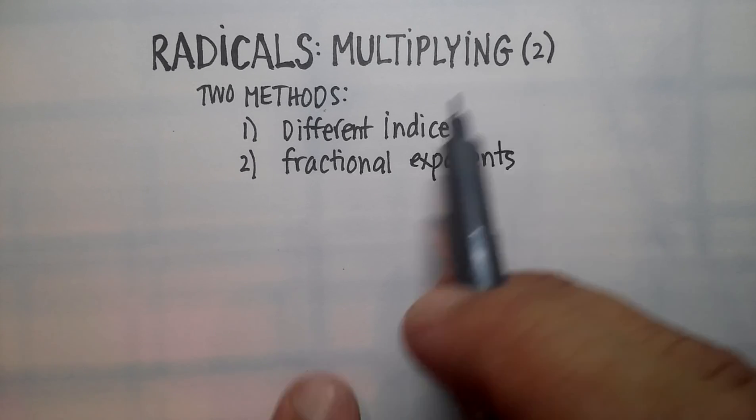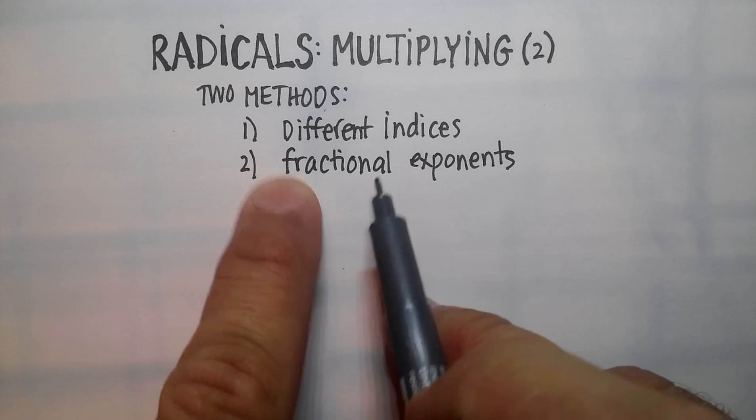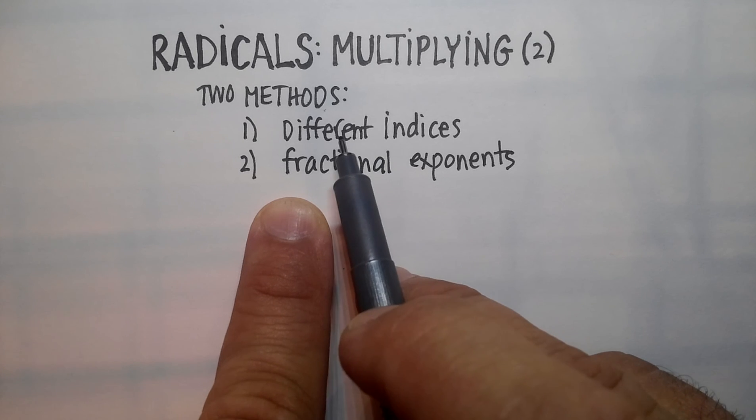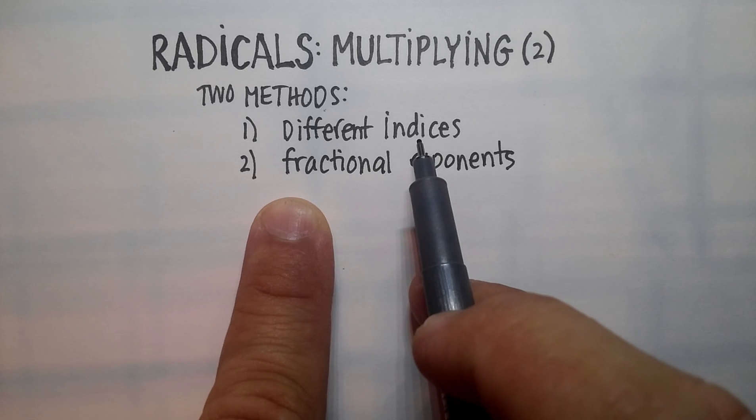The first one I talked about where the indexes are the same, the indices are the same, and I showed you the fractional exponent method. Now here I'm going to show you how to multiply radicals that have a different index.